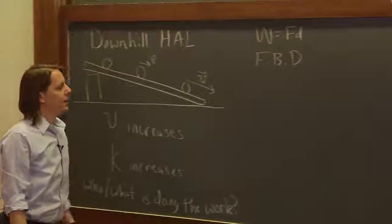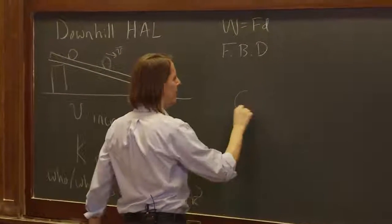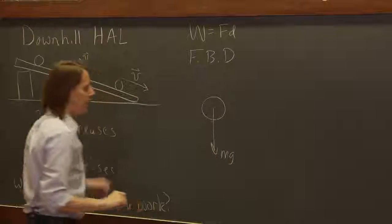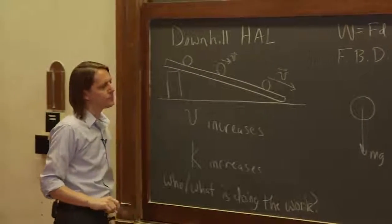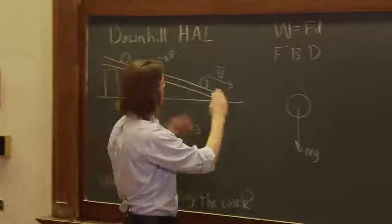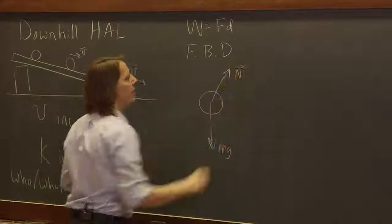Do a free body diagram. Okay. So we've done a free body diagram in this situation before. If you have Hal here, MG, of course, pulls down. And there's a normal force pushing perpendicular to the direction of the track. So if the track is roughly like that, the normal force is kind of out here like this.